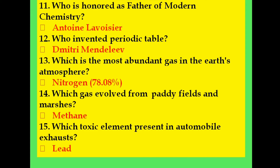Who is honored as the father of modern chemistry? Antoine Lavoisier. Who invented the periodic table? Dmitri Mendeleev. Which is the most abundant gas in the Earth's atmosphere? Nitrogen, at 78.08%. Which gas is evolved from paddy fields and marshes? Methane.